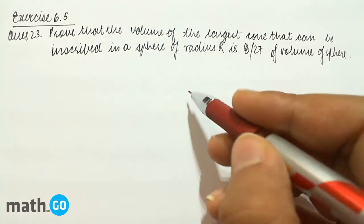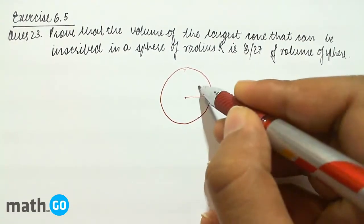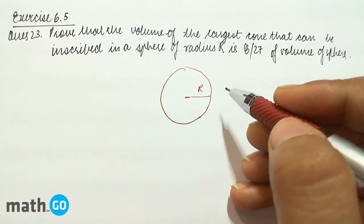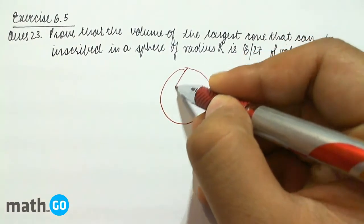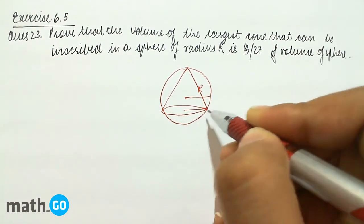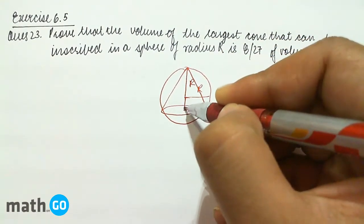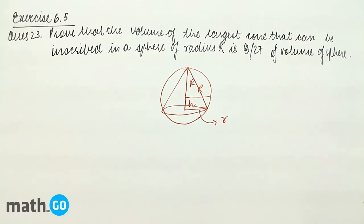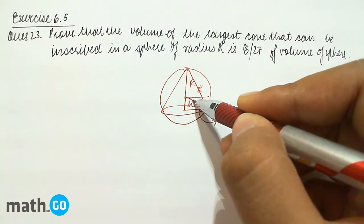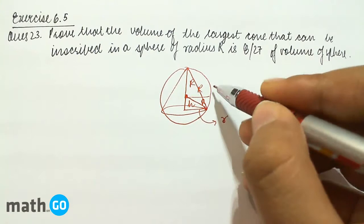So let us consider a sphere here first. This radius is given to be capital R. We have placed the largest cone. Let this be the cone, with its radius as small r. This is capital R. Let this distance be h. And we know that this is also capital R. This is from the center to the circumference.